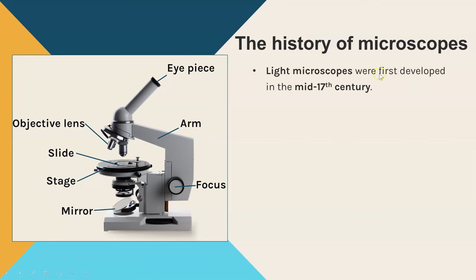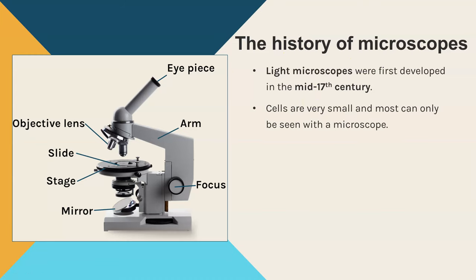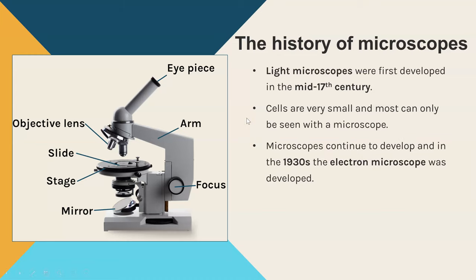Light microscopes were first developed in the mid 17th century, so they have been around for a long time. Cells are very very small — they're the basic building blocks that make up all organisms, but most of them can only be seen with a microscope because they're so small.